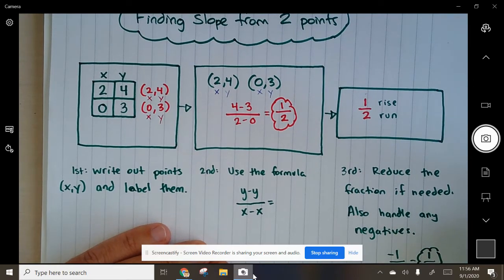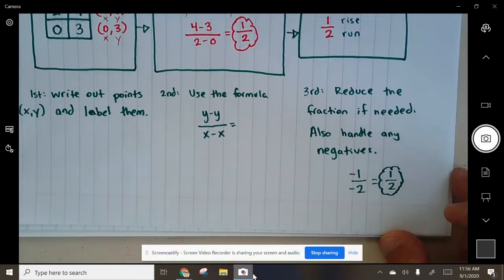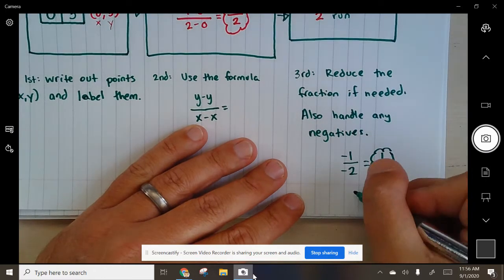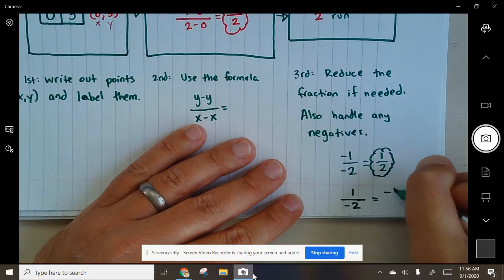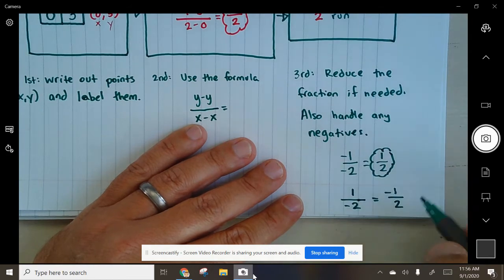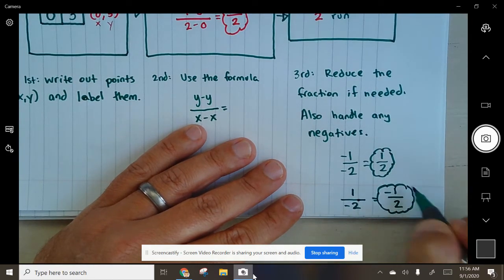What if it was 1 over negative 2? This equals, the negative always goes to the top. Okay?